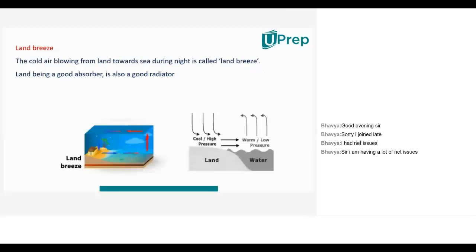Convection currents can be observed in refrigerators, thunderstorms, steaming of beverages, campfires, and more. Convection current means hot air goes up and cool air comes down — that process is called convection currents. These convection currents can be understood through examples such as land breeze and sea breeze.